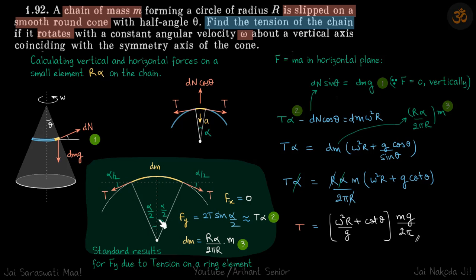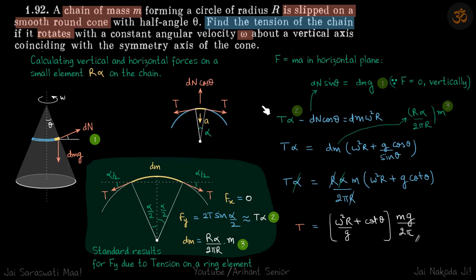On this elemental ring, because it is rotating in a circle, the acceleration is towards the center. So the net force of these three forces will be towards the center, causing centripetal acceleration. Writing F = ma in the horizontal plane: T·alpha minus DN·cos theta = dm × omega²·r, where m is dm and a is omega²·r.